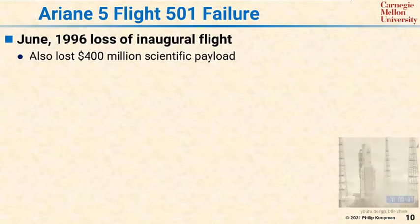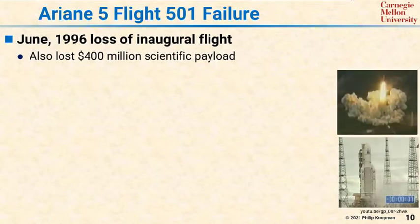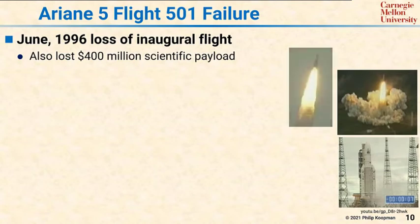You can see the rocket on the pad, you can see it launching, and you can see it in mid-flight. Note that in order to achieve orbit, the rocket tilts over and develops significant horizontal velocity on its way to orbit. This turned out to be a problem.